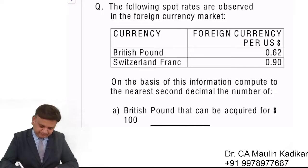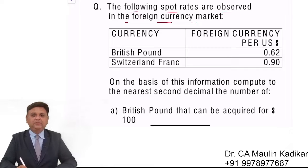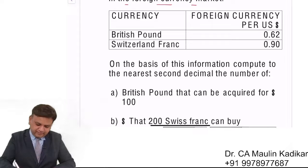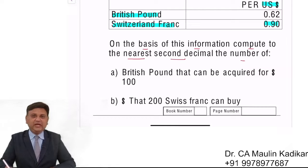Let us see the next question. The following spot rates are observed in the foreign currency market: British Pound and Switzerland Franc are both given per US dollar. On the basis of this information, compute to the nearest second decimal the number of...